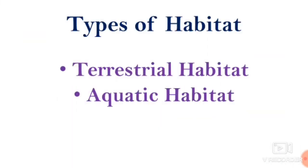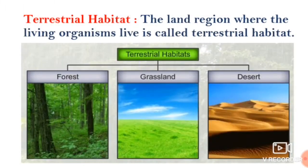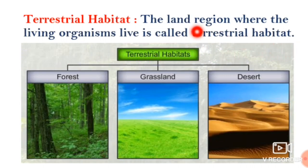The types of habitat are terrestrial habitat and aquatic habitat. Let us learn one by one. First, terrestrial habitat. The land region where the living organisms live is called terrestrial habitat.